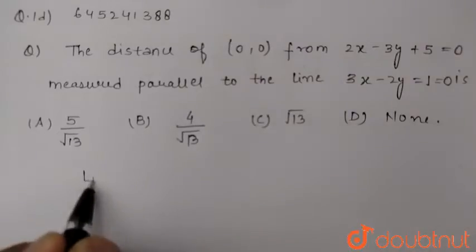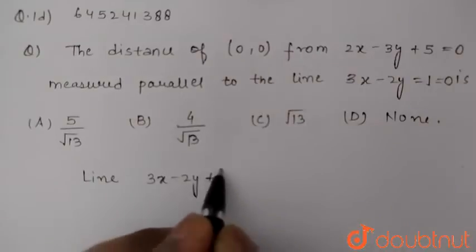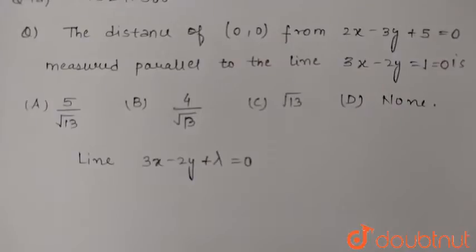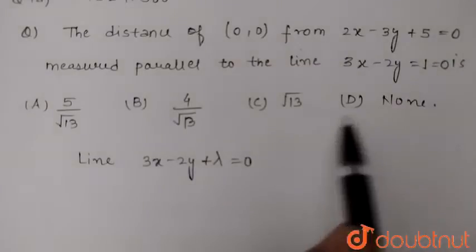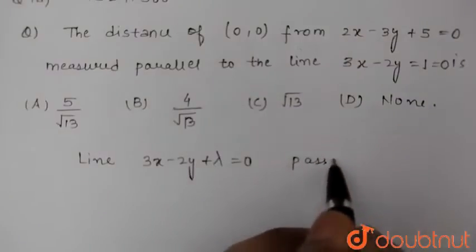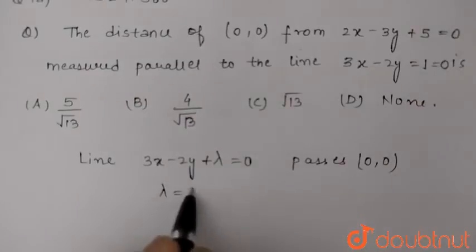Considering line 3x minus 2y plus lambda equal to 0, which is parallel to this line 3x minus 2y equal to 0. Now this line passes through (0,0), so we can say lambda equal to 0.